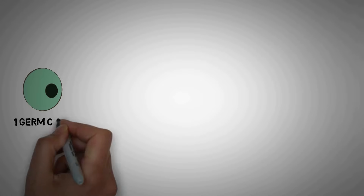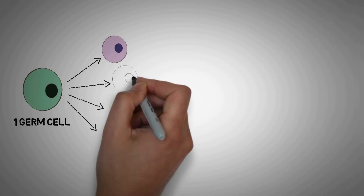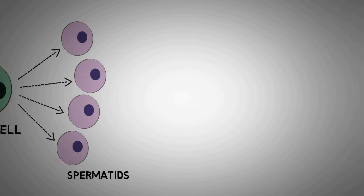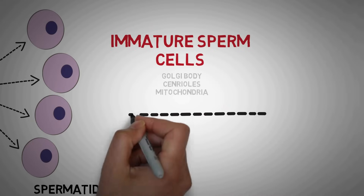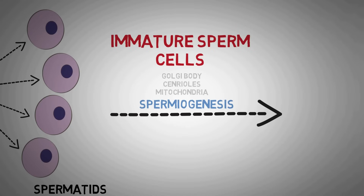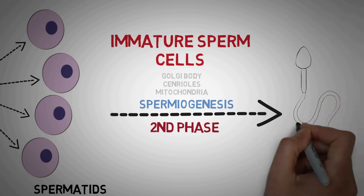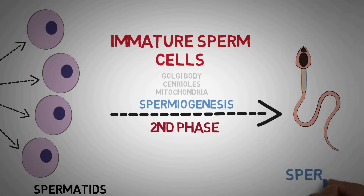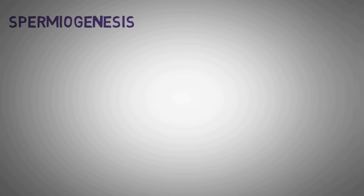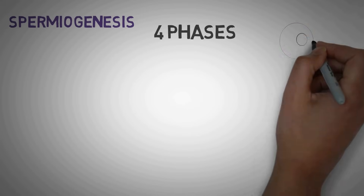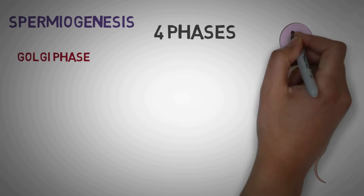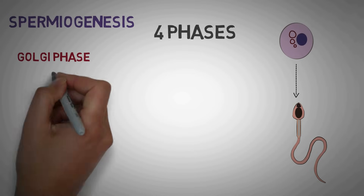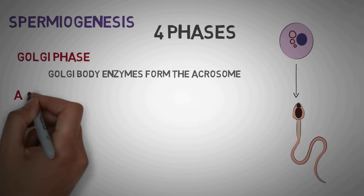So now we know that one germ cell gives rise to four spermatids. However, spermatids are immature sperm cells incapable of fertilization, and they contain numerous cell bodies like the Golgi body, centrioles, and mitochondria. The spermatids undergo spermiogenesis — the second phase of spermatogenesis — to form mature sperms. This process is divided into four phases. The first is the Golgi phase, where the Golgi body present in the spermatid forms the enzymes of the acrosome.